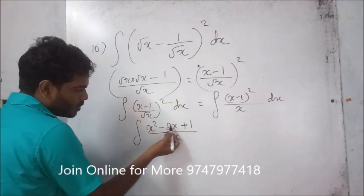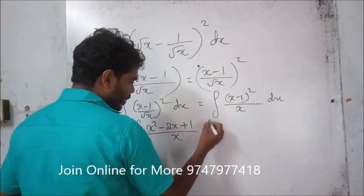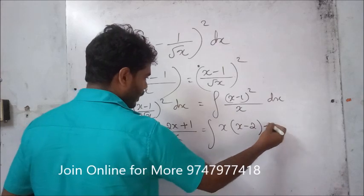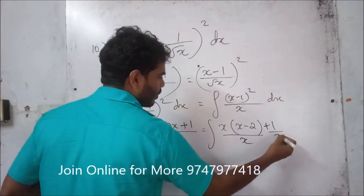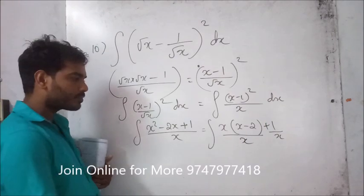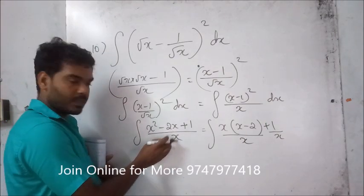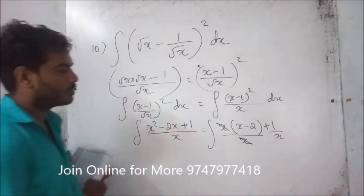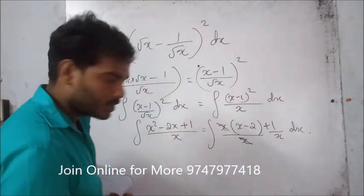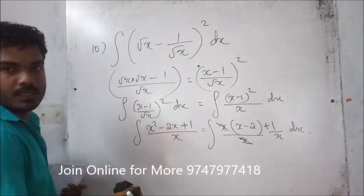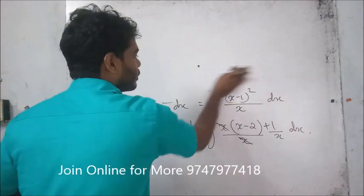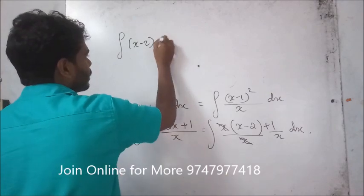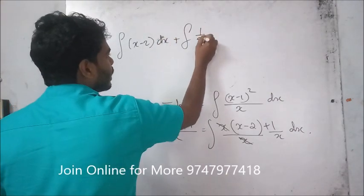Next, dividing x squared minus 2x plus 1 by x gives x minus 2 plus 1 divided by x. So the question becomes integration of x minus 2 plus 1 by x dx, which we split as integration of x minus 2 dx plus integration of 1 by x dx.